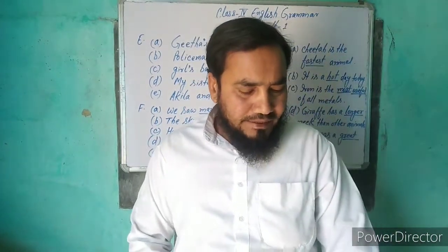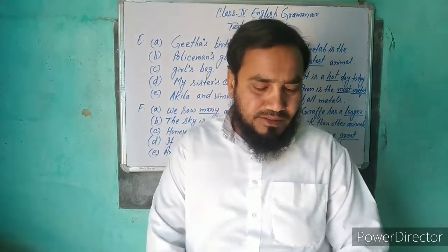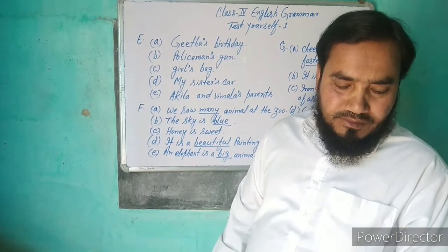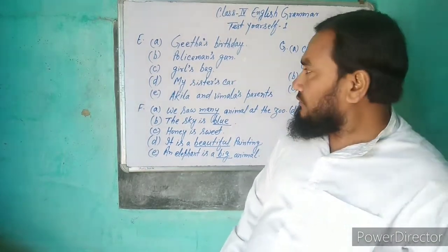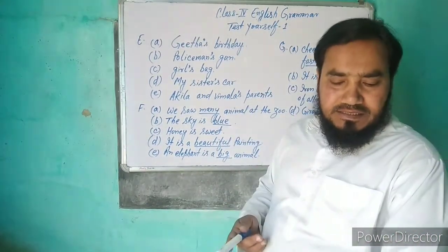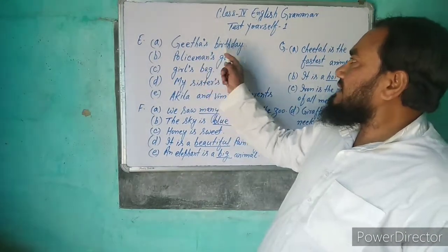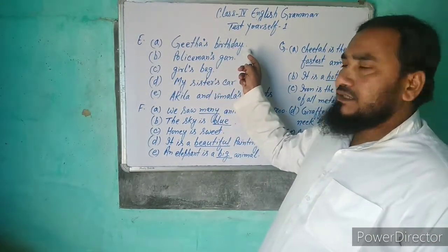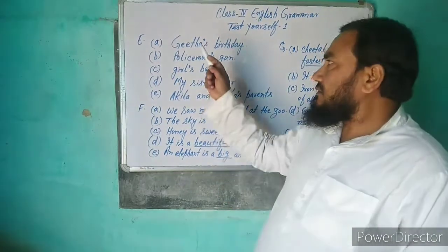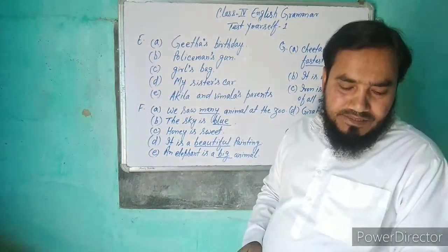A میں sentence ہے: The birthday of Gita۔ اس کو rewrite کریں گے، possessive noun لگا کر۔ تو کیا ہوگا؟ Gita's birthday۔ The birthday of Gita کی جگہ Gita's birthday۔